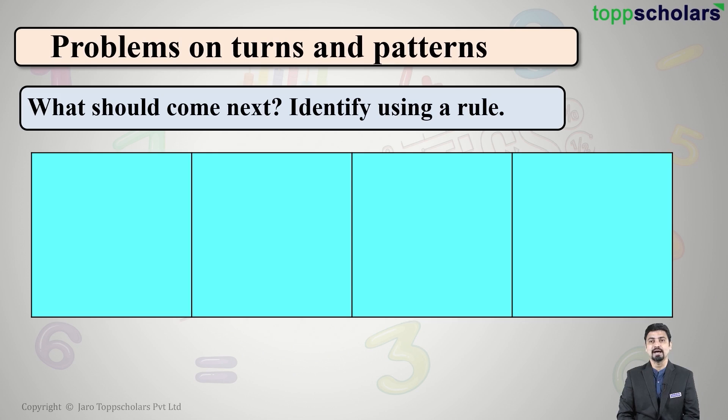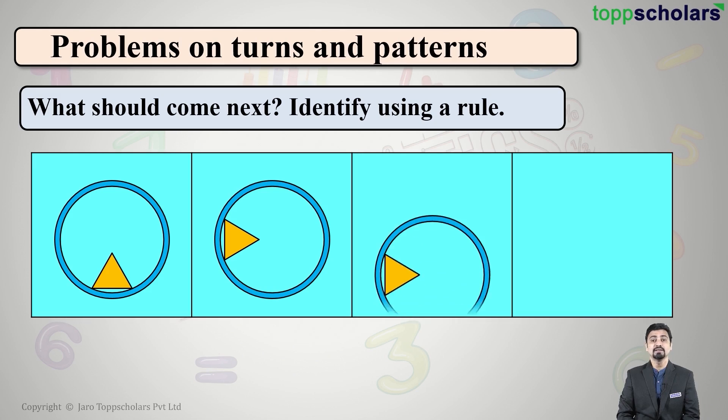Let's look at the different pictures. First one, then we have the second one. After this rotation, the third is found by a further rotation. Then tell students, what will come in the next box? We have to identify the rule.